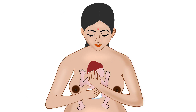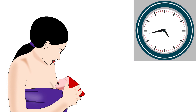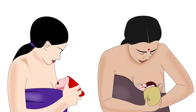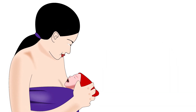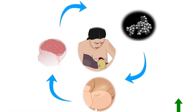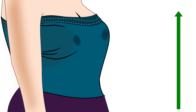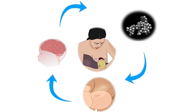KMC consists of two main components: continuous and prolonged skin-to-skin contact between the mother and her baby, and exclusive breastfeeding. The first component is skin-to-skin contact. It improves the letdown reflex and ultimately increases breast milk production. The letdown reflex has been explained in another tutorial of the same series.